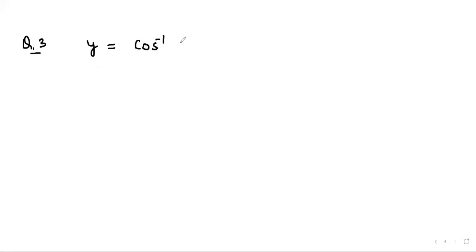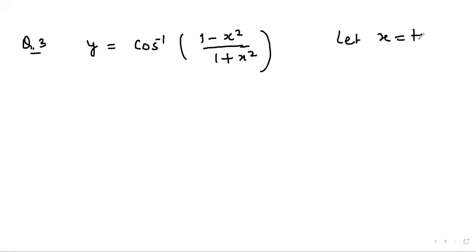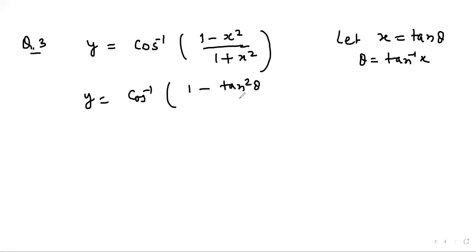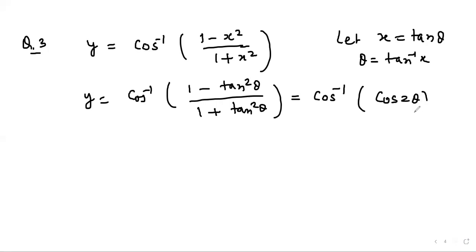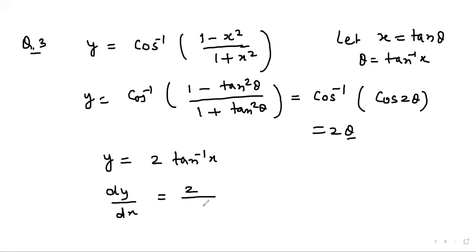Question 3: y = cos⁻¹((1 − x²)/(1 + x²)). If we put x = tan θ, then (1 − tan² θ)/(1 + tan² θ) = cos 2θ. So let x = tan θ, θ = tan⁻¹ x, and y = cos⁻¹(cos 2θ) = 2θ = 2 tan⁻¹ x. Therefore dy/dx = 2/(1 + x²).